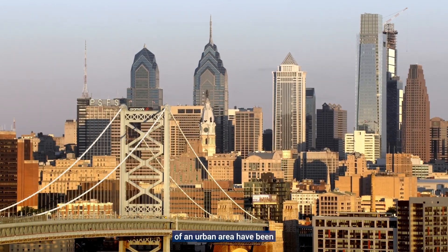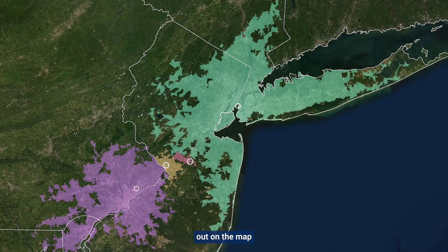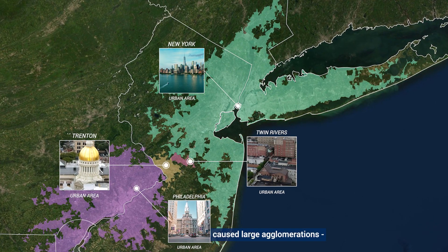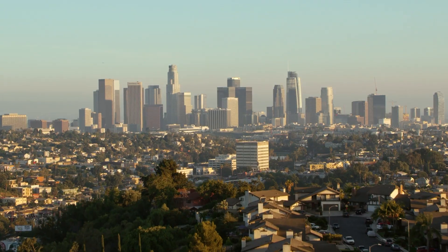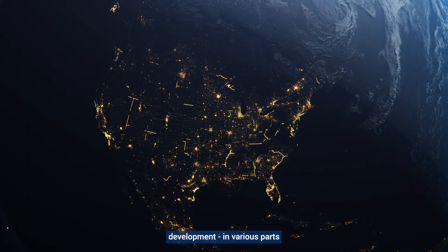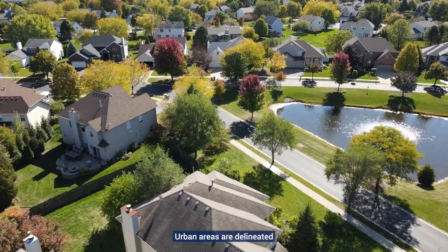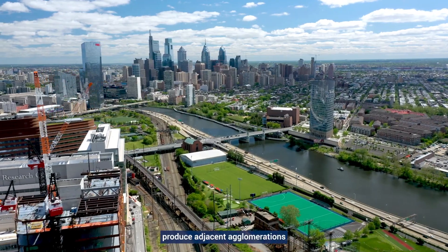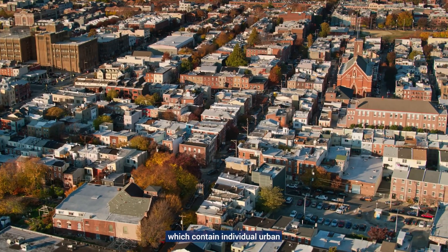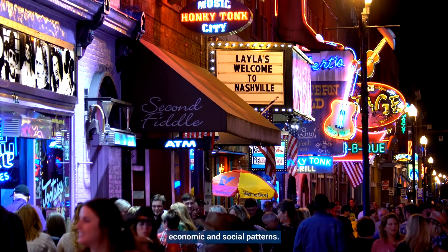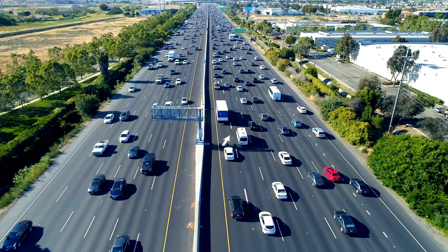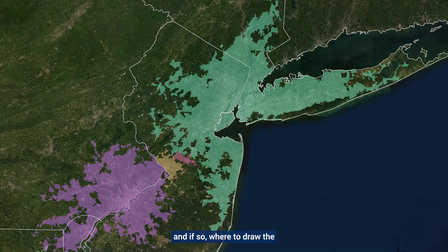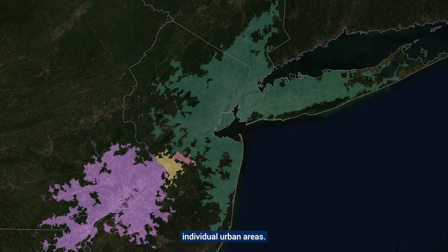Once the boundaries of urban areas have been defined, you can zoom out on the map and see other urban areas and their relation to each other. Over time, urbanization has caused large agglomerations — areas of continued urban development — in various parts of the nation. Urban areas are delineated after each decennial census. The delineation process can produce adjacent agglomerations which contain individual urban areas that have their own unique economic and social patterns. Commuting patterns are also used to determine whether to split large agglomerations and, if so, where to draw the boundaries between individual urban areas.